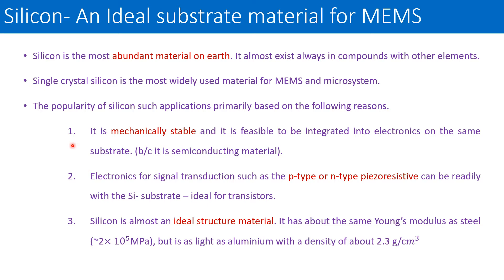The first reason is that silicon is mechanically stable, making it feasible to integrate it with electronics on the same substrate. Along with electronic components, we can also fabricate MEMS components because silicon is a semiconducting material. Electronics for signal transduction — such as P-type or N-type wells — can be easily created by doping P or N on particular locations, making it easy to fabricate transistors and piezo-resistive elements.